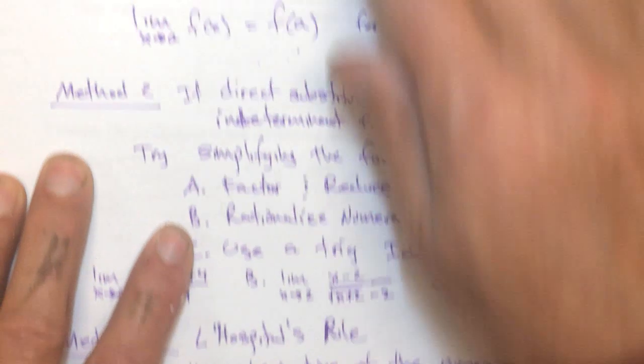Then we say the limit exists. Those two-sided limits, or at least one-sided limits, are equal.